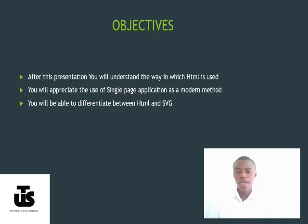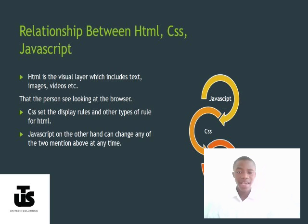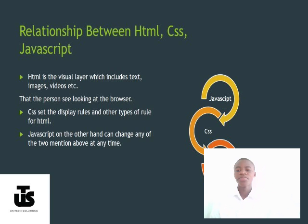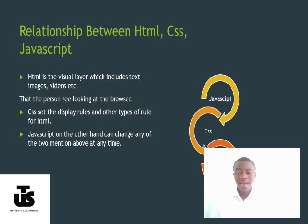You will be able to differentiate between HTML and SVG. But before that, let's look at the relationship between HTML, CSS, and JavaScript. HTML is the visual layer which includes text, images, videos, and so on — that's the part the person is looking at in the browser. CSS, which is Cascading Style Sheet, helps you position your web page and HTML elements — it sets the display rules for HTML. JavaScript, on the other hand, can change any of the two at any time — you can call a function and it would change the look of CSS or HTML in the web browser.